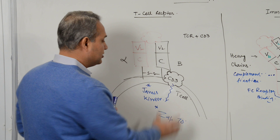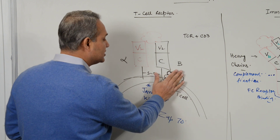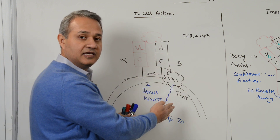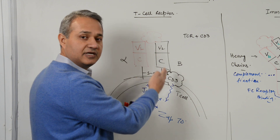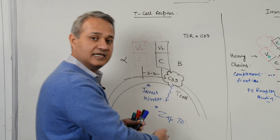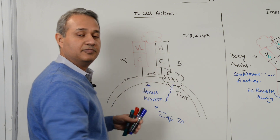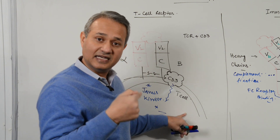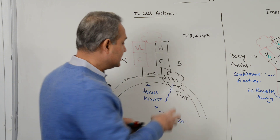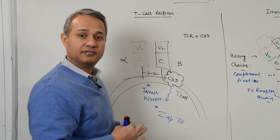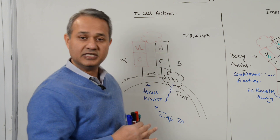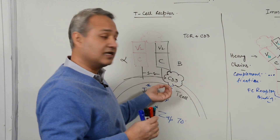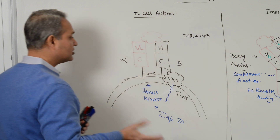If there is no CD3, the T cell receptor has no way of getting the signal into the cytoplasm to activate the T cell itself. CD3 is the signal transduction mechanism for the T cell receptor — they both work in combination.